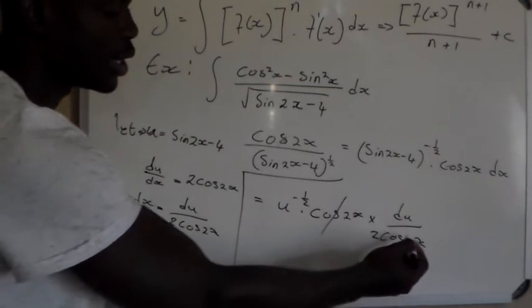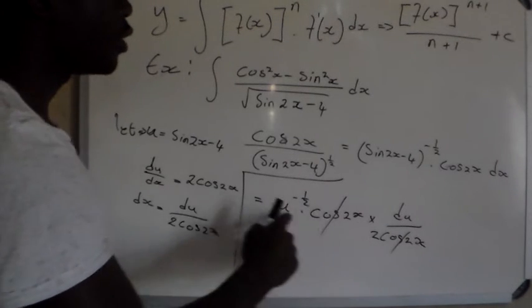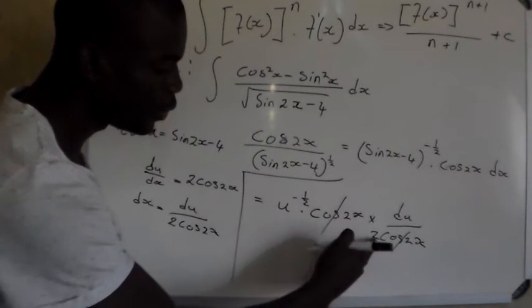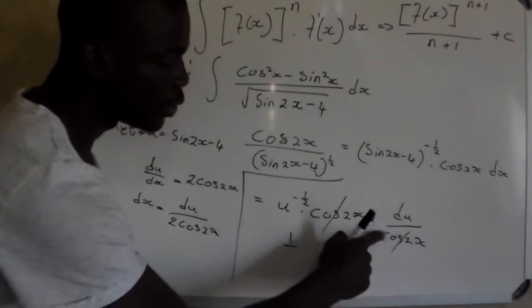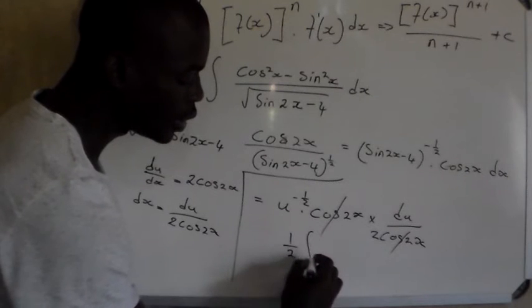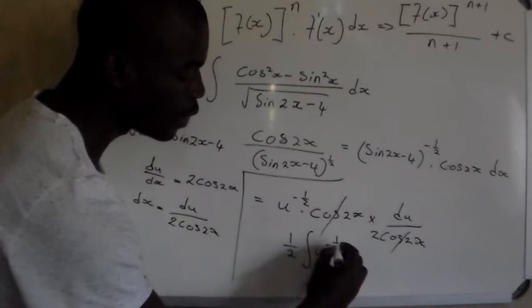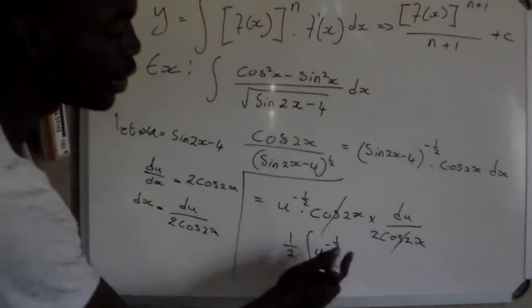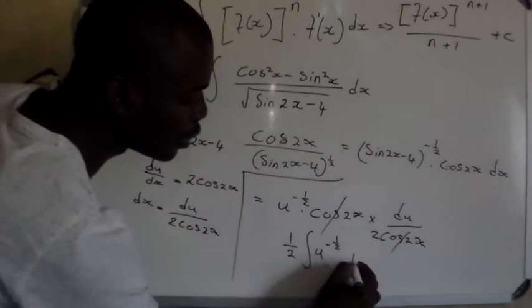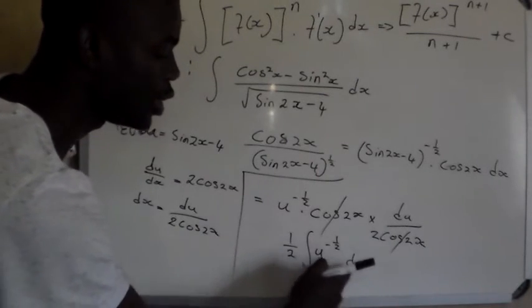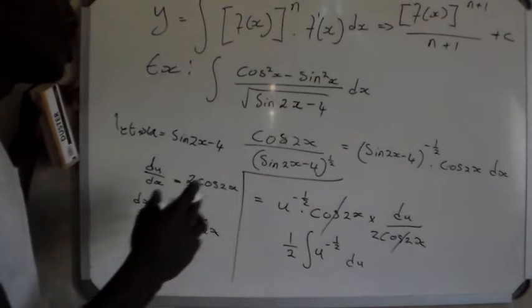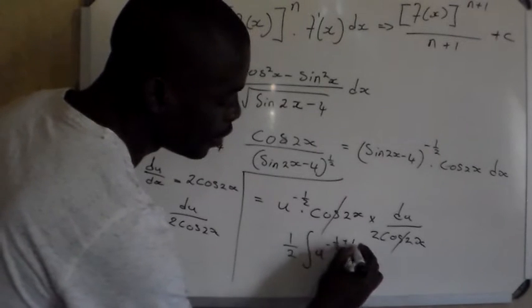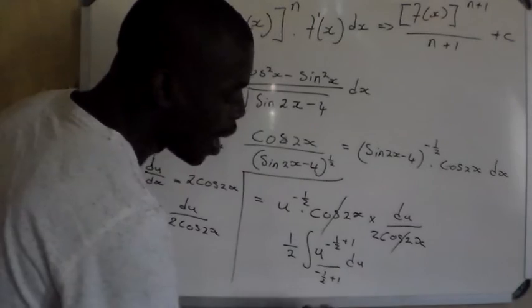After substituting, we have u to the power negative one-half, multiplied by cos 2x, multiplied by dx, where dx equals du over 2 cos 2x. The cos 2x terms cancel each other. We remain with one-half multiplied by the integral of u to the power negative one-half du. Now we apply the standard integration formula: we add 1 to the power and divide by the new power.